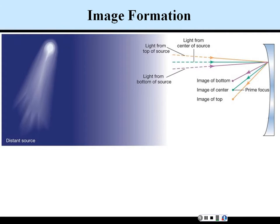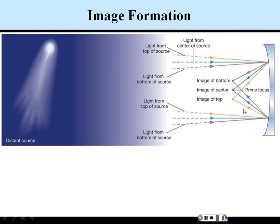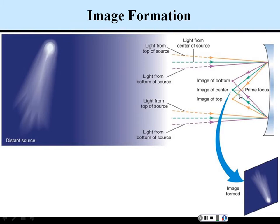So ultimately we're forming an image. Here's an image of a comet incident on a reflecting surface. The top rays of the image reflect out and end up on the bottom, and the bottom part reflects out and comes out on the top, with angle equaling angle on the way out. The same thing occurs for light rays from the bottom of the source, so your ultimate image is actually going to be inverted with respect to the true object.